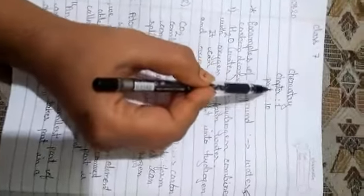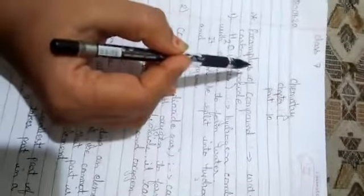Good morning students. Seventh class chemistry chapter 1 part 10. Today we are going to learn about examples of compounds.